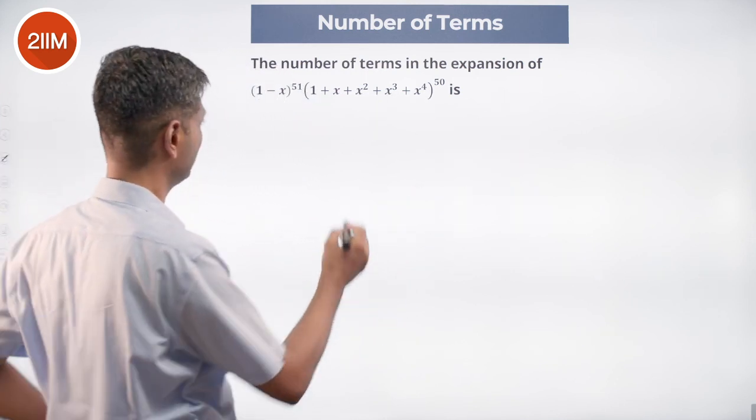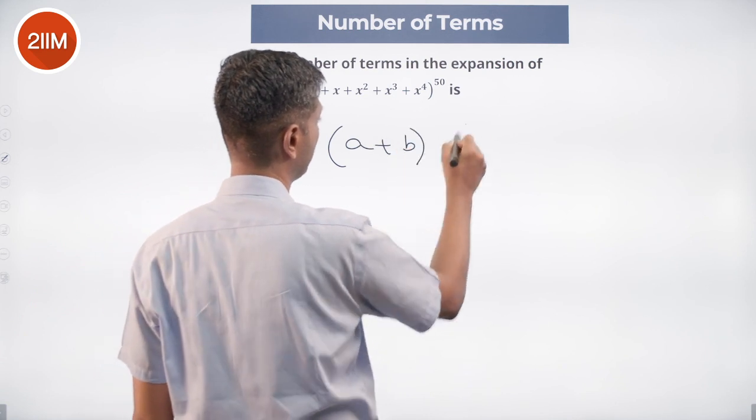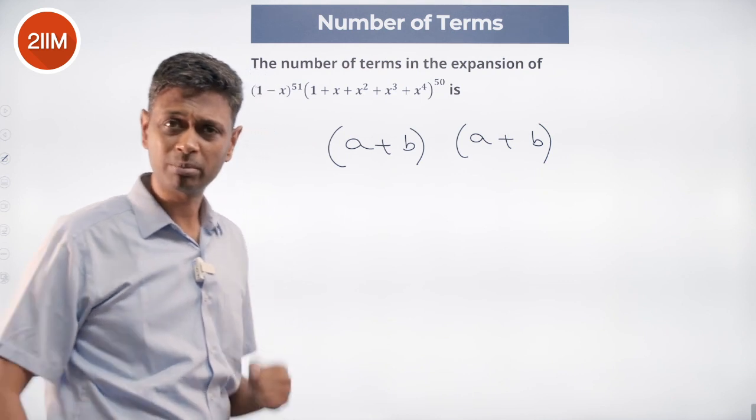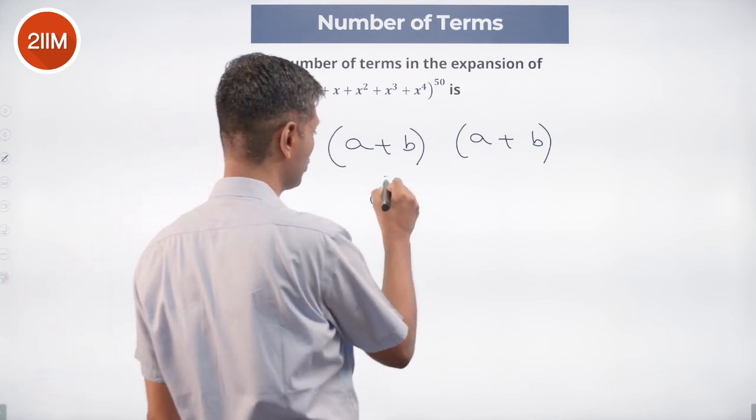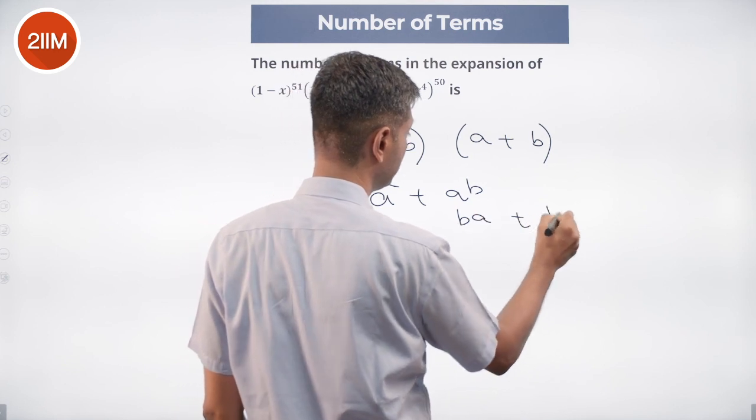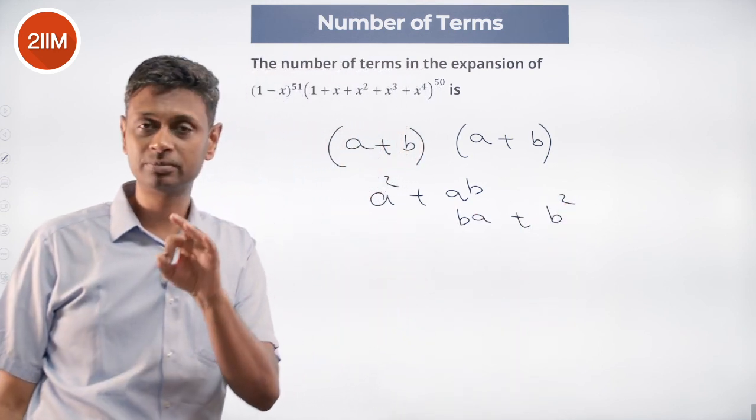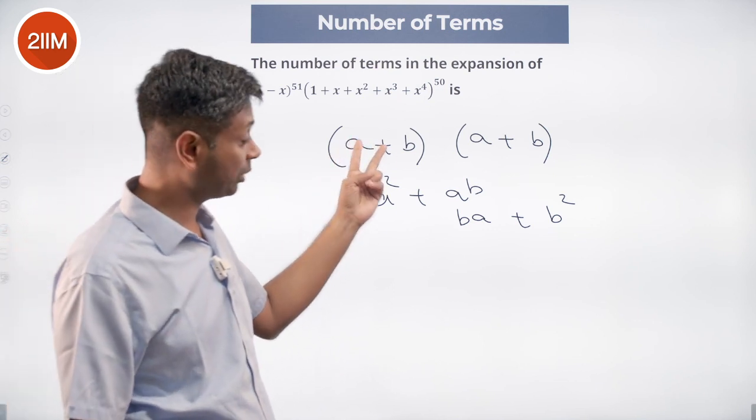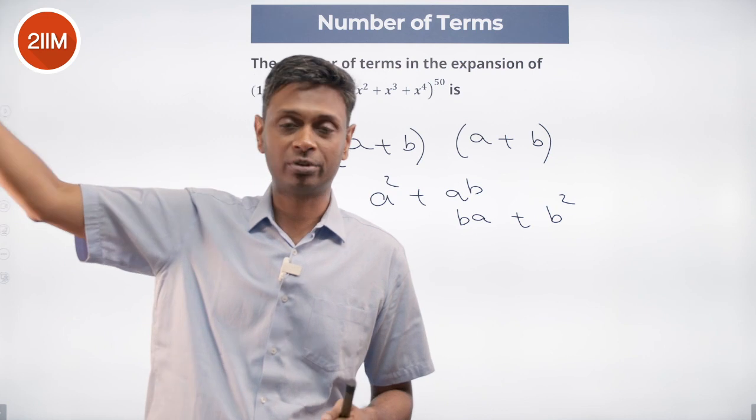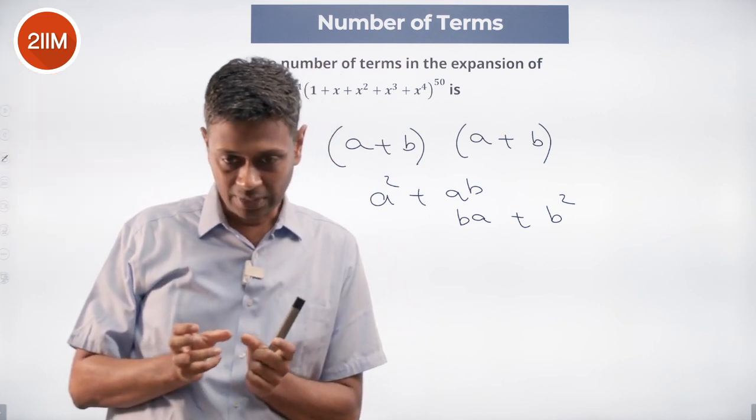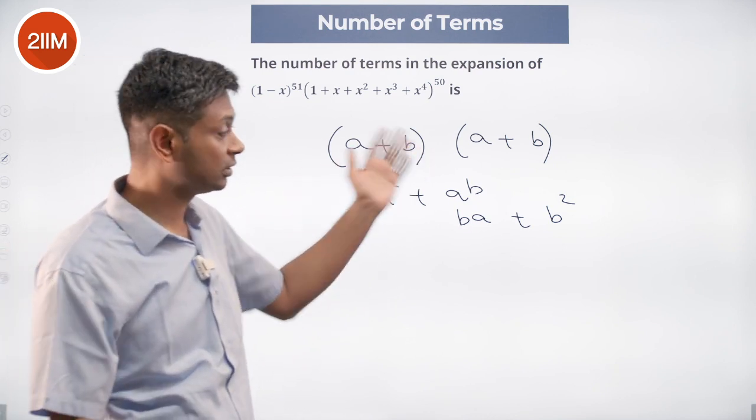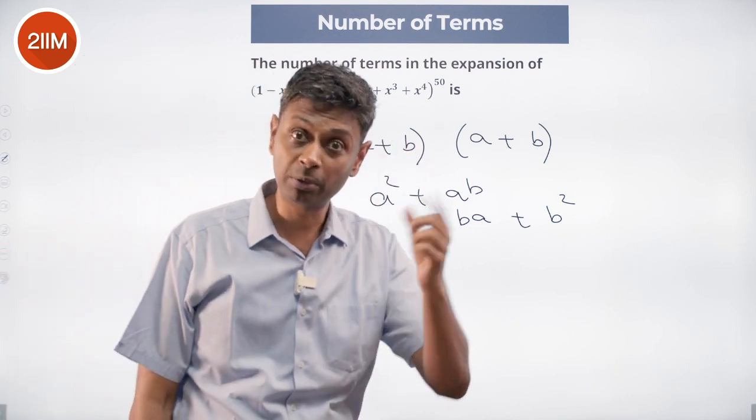I'm going to do a very simple example. Suppose you do a plus b into a plus b. Just 2 into 2, 4 terms. But how it works is a square plus ab plus ba plus b square, a plus b square. Only 3 terms. So I multiply one expression with 2 terms and another expression with 2 terms, I can get up to 4 terms. But if the algebraic part of 2 of the terms are same, they will combine. That is how we multiply 2 polynomials. So it will be only a square plus 2ab plus b square.